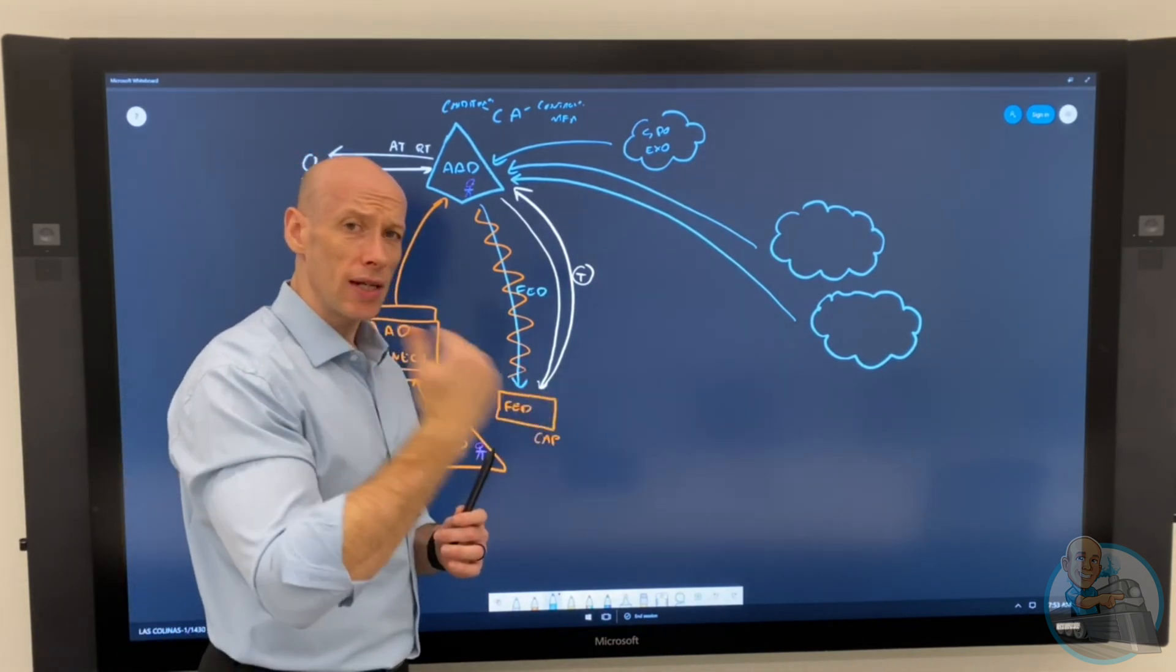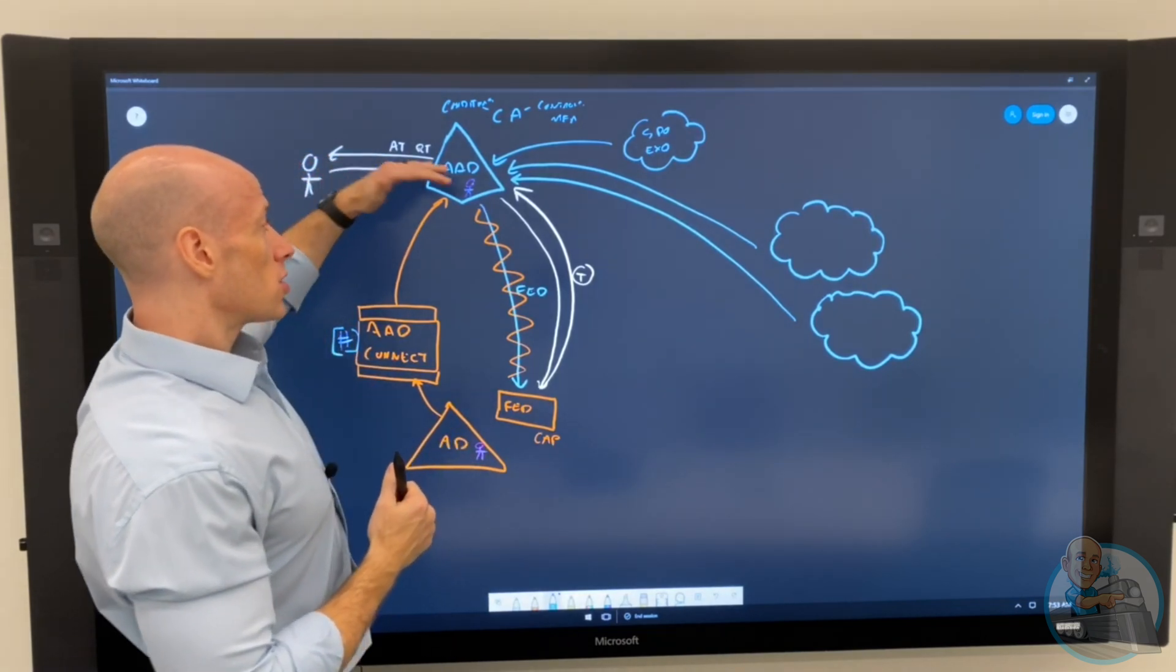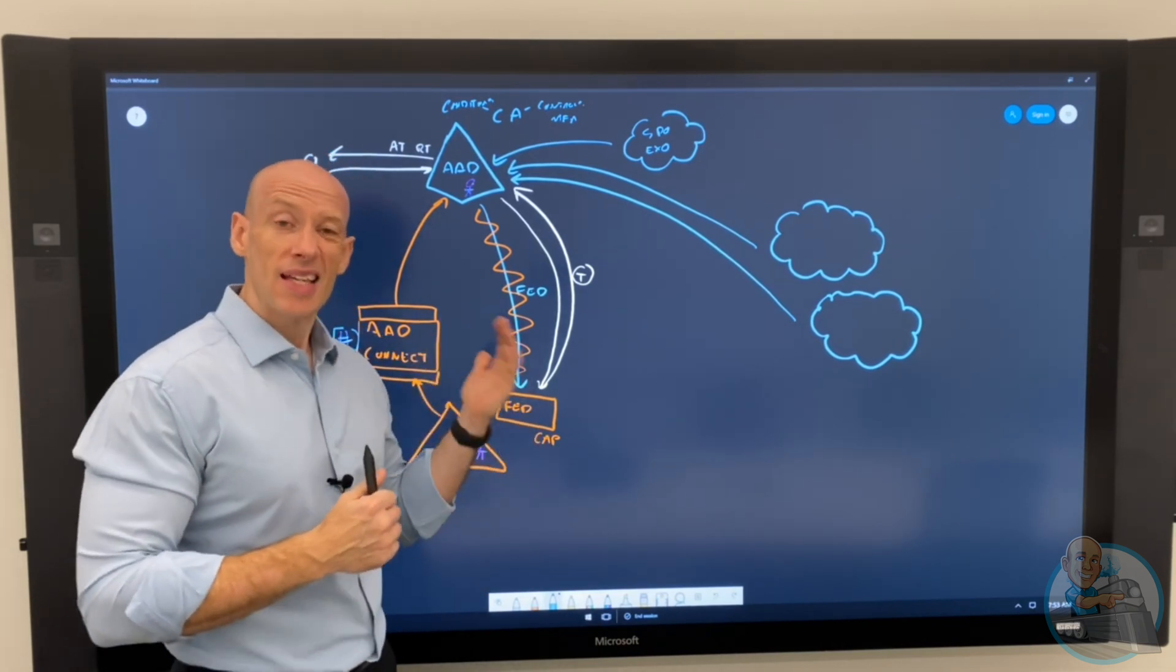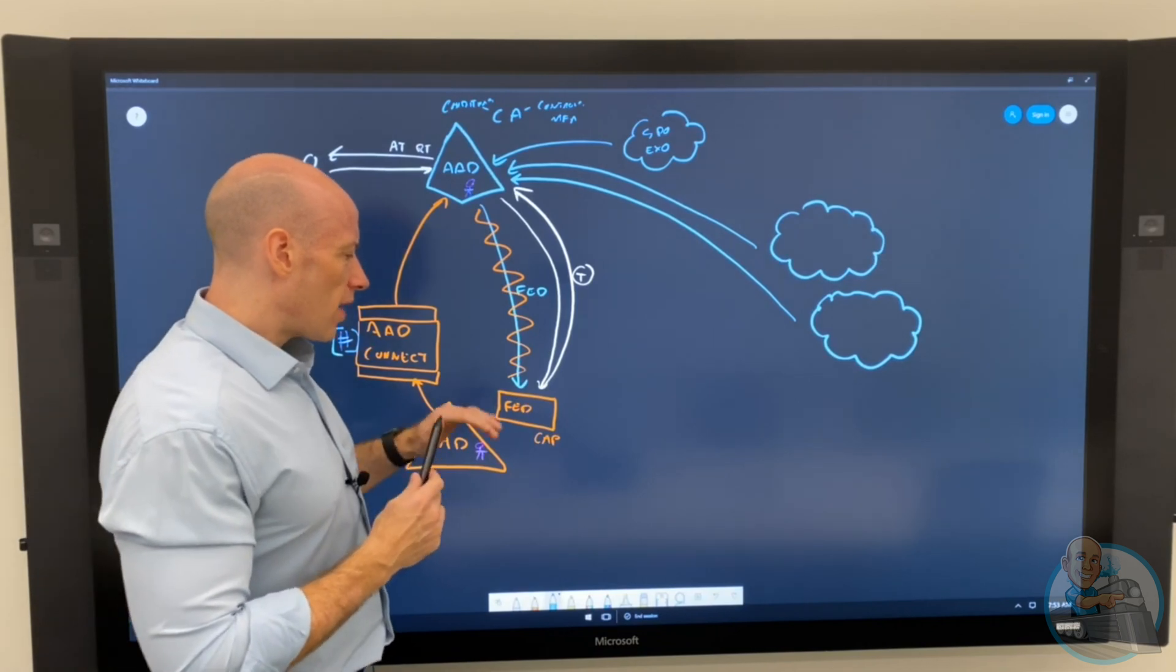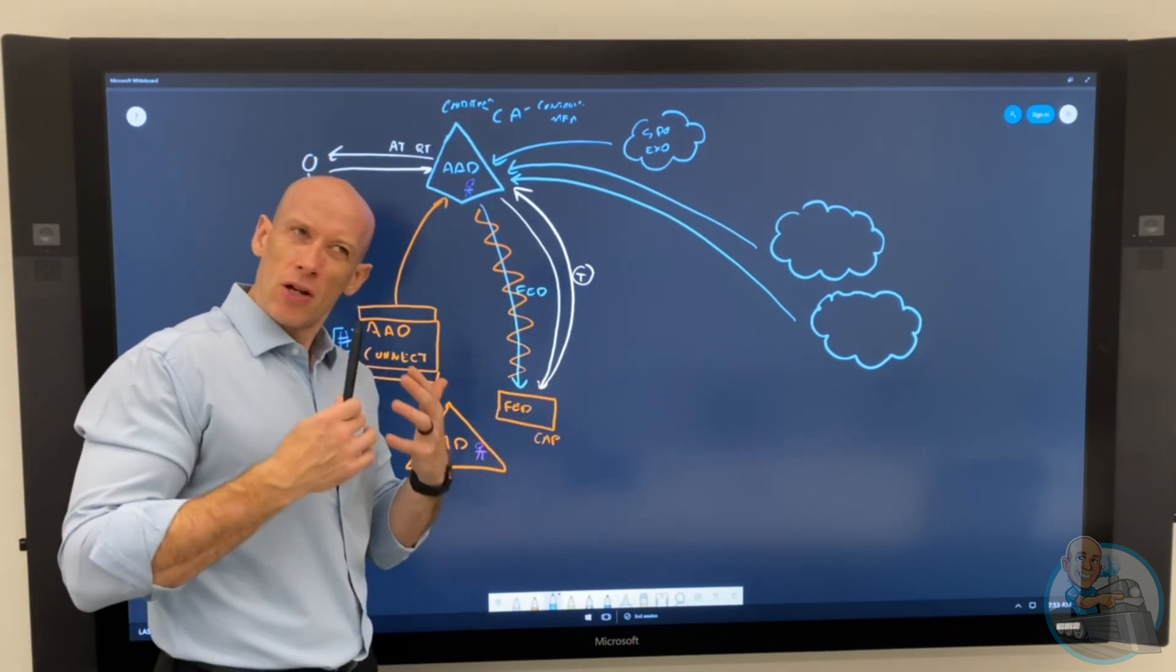And federation was a great solution in its time. It gave me single sign-on. But now with password hash sync, with password authentication, I can do seamless sign-on. I really get kind of that same experience. So hopefully that helps explain where federation comes into the flow for kind of those typical scenarios.